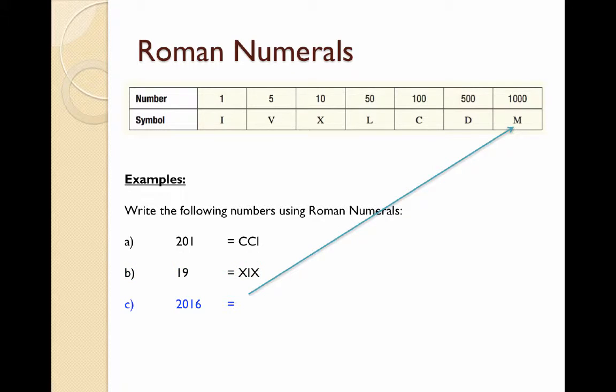Finally, this year 2016. We're going to start with 2000 which is MM. Then we don't have any 100s, so we go and look for the 10 which is going to be X, followed by a combination of V's and I's which is just VI. 2016.